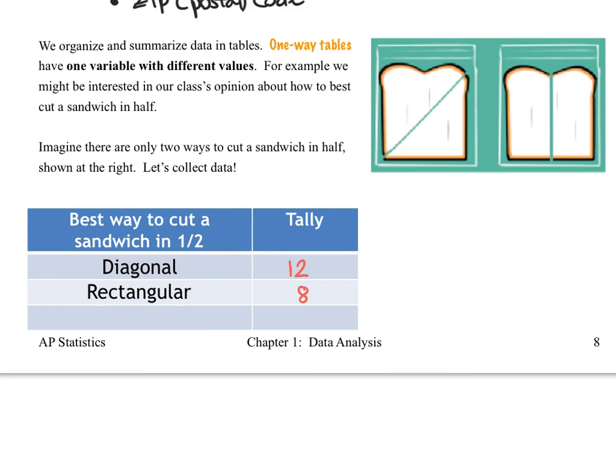So imagining that we have 20 students in the class and we take a survey, let me just show you what a tally would look like. A tally would be as we go around and we accumulate different values. So for example, 1, 2, 3, 4, 5, 6, 7, 8, 9, 10, 11, 12. And for rectangular, we might have 1, 2, 3, 4, 5, 6, 7, 8. Now, what we haven't seen, but we need to include anytime we have a one-way table or a two-way table is the total.